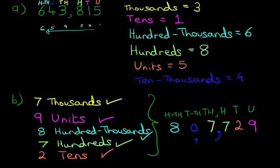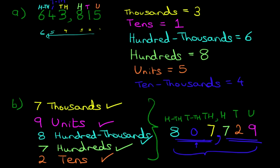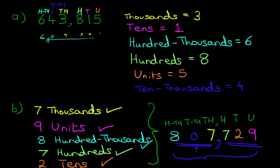So what number do these units represent? The number is eight hundred and seven thousand, seven hundred and twenty-nine — 807,729. And that is how we work out the units for numbers up to one million and how we read the units.